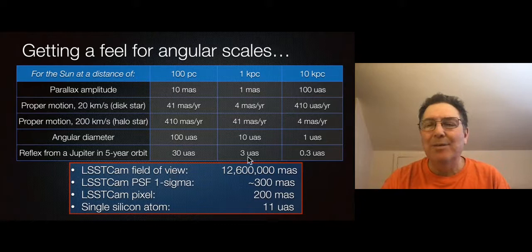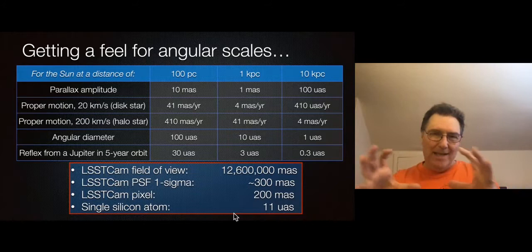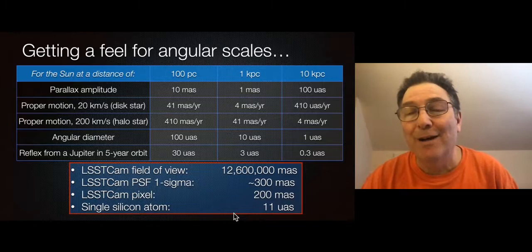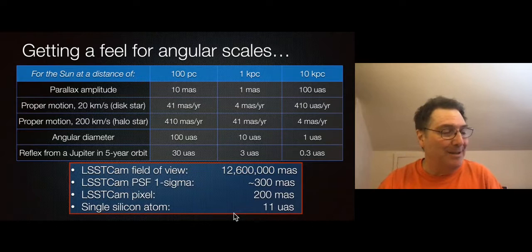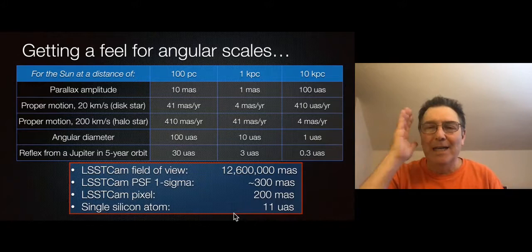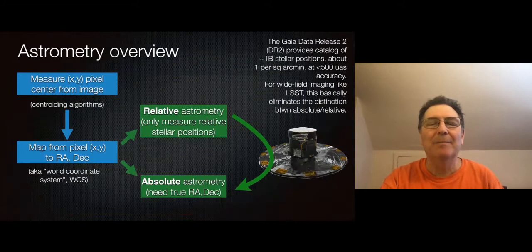Measuring a few milli-arcseconds means measuring positions to a percent or less of one pixel. For extrasolar planets, we'd be asking whether a star's image moved by roughly one silicon lattice spacing on the CCD — an extremely high precision measurement. We'll mostly be dealing with milli-arcsecond scales here.